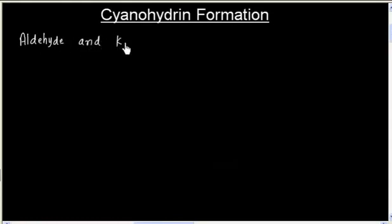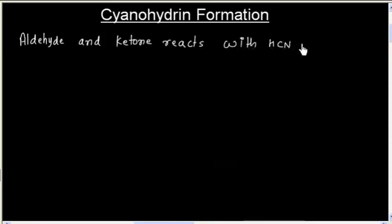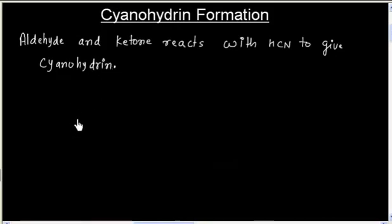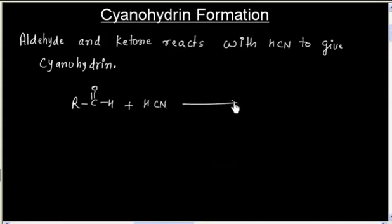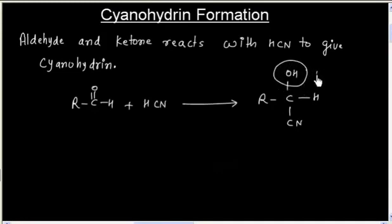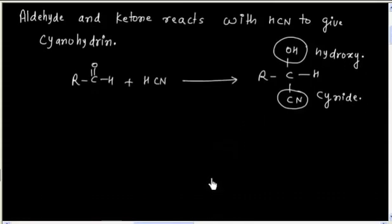Aldehyde and ketone reacts with HCN to give cyanohydrin. For example, if we have an aldehyde and it reacts with HCN, we get a product that contains a hydroxy group and a cyanide group. That is why the product is called cyanohydrin.